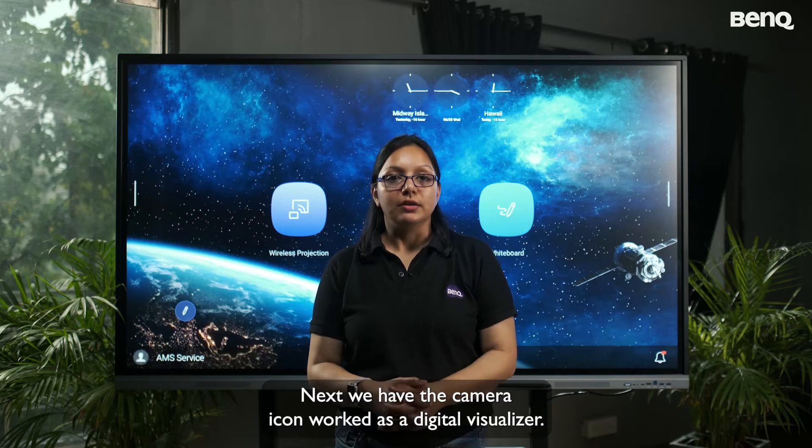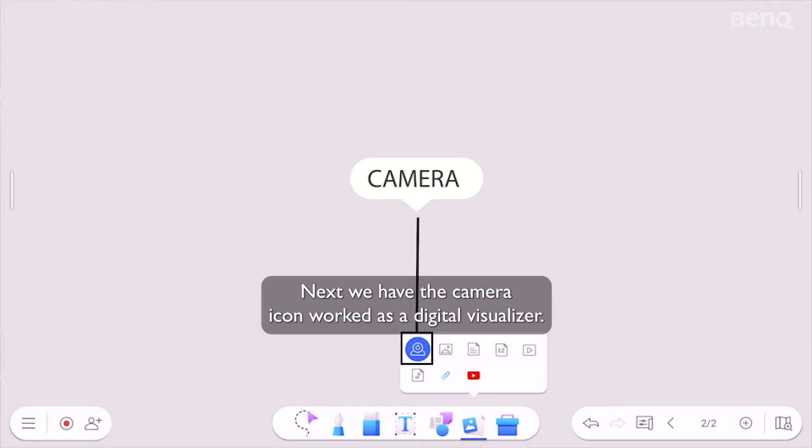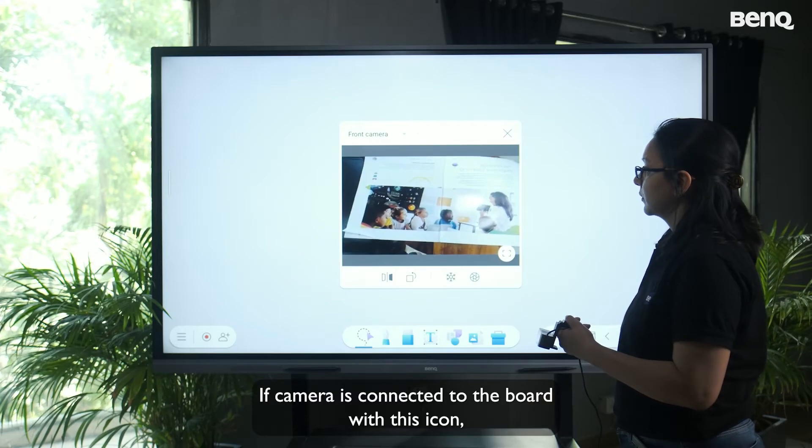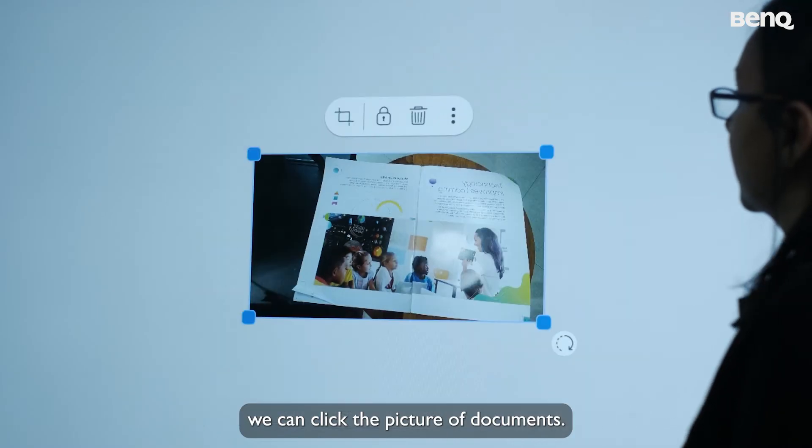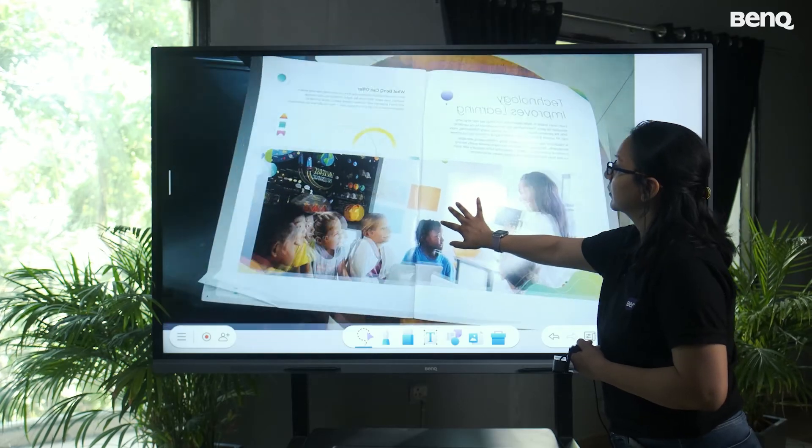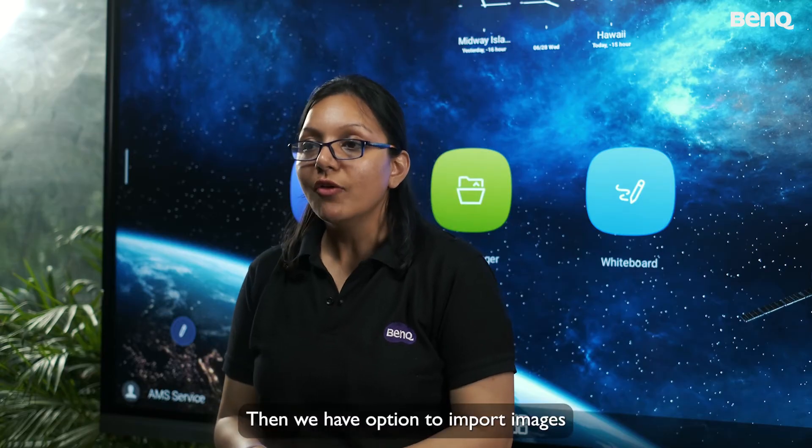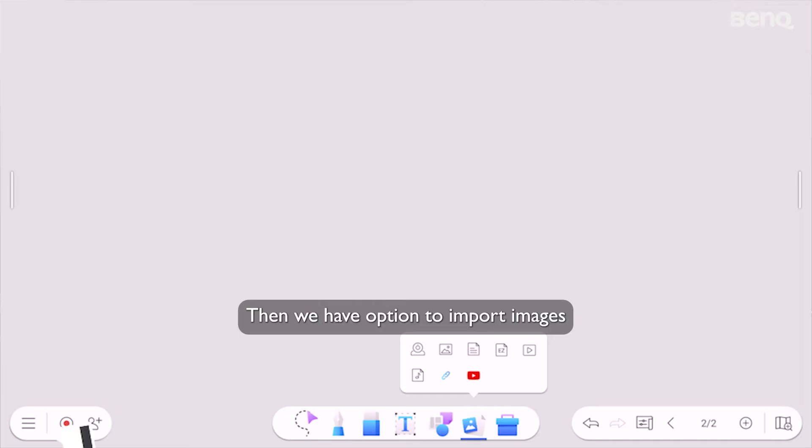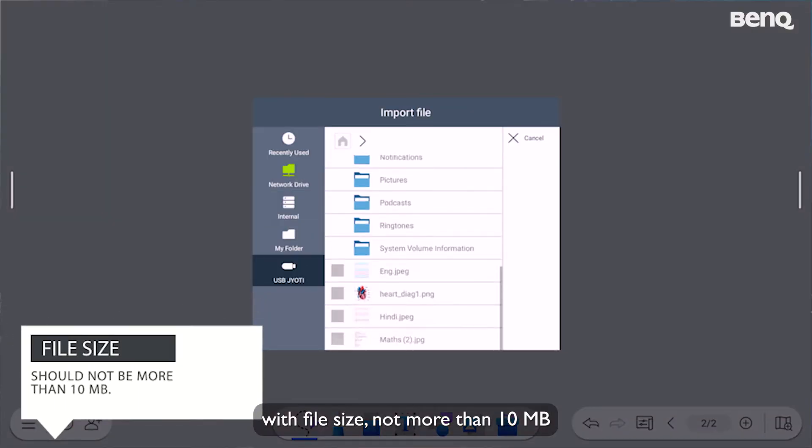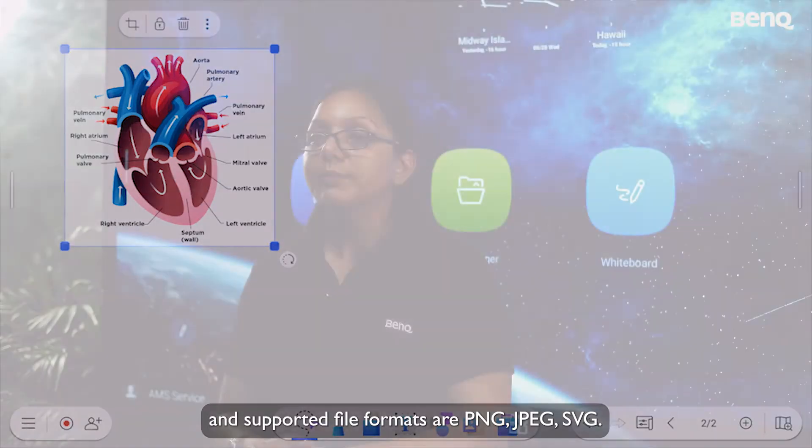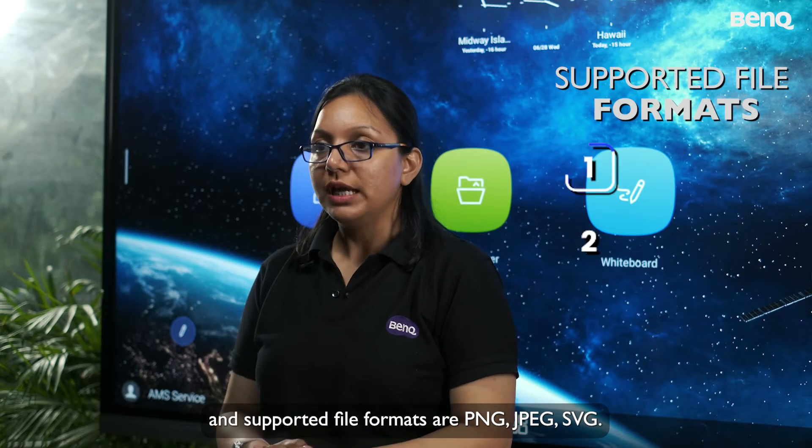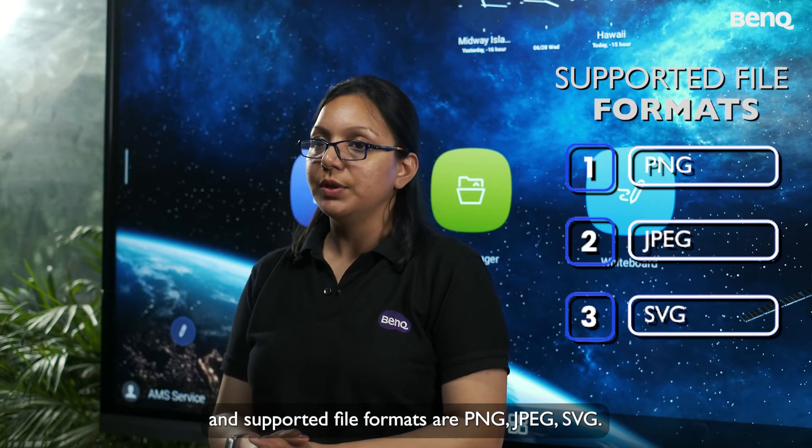Next, we have the camera icon worked as a digital visualizer. If camera is connected to the board, with this icon, we can click the picture of documents. Then we have option to import images with file size, not more than 10 MB. And supported file formats are PNG, JPEG, SVG.